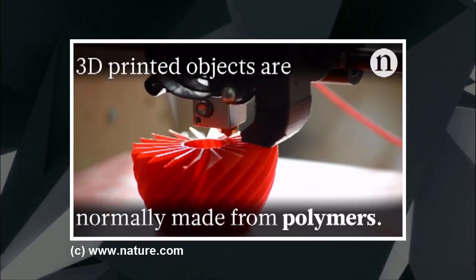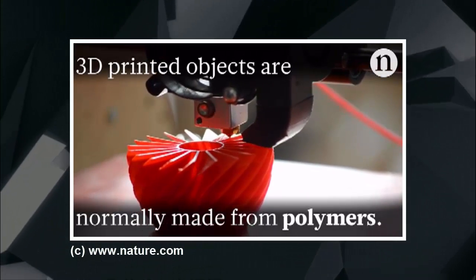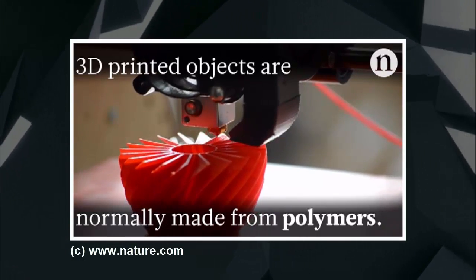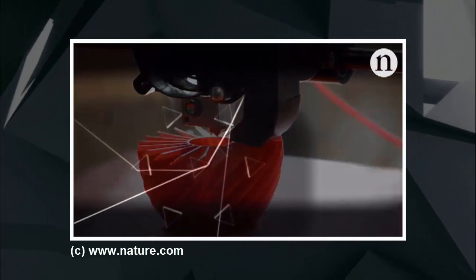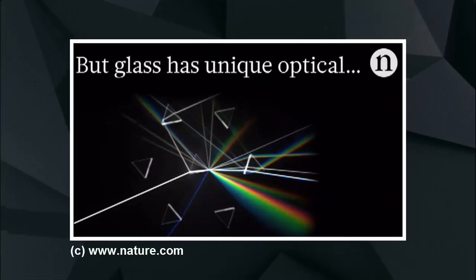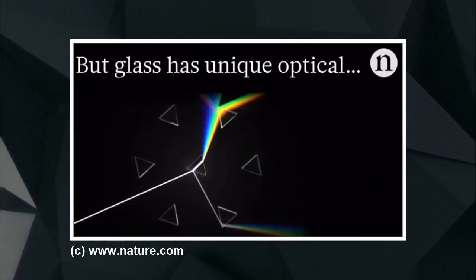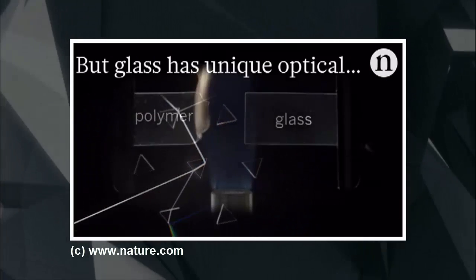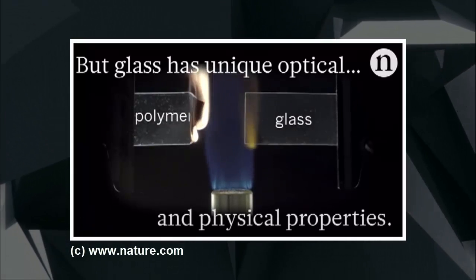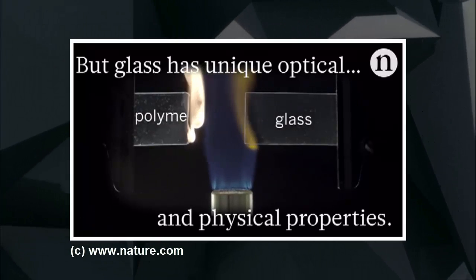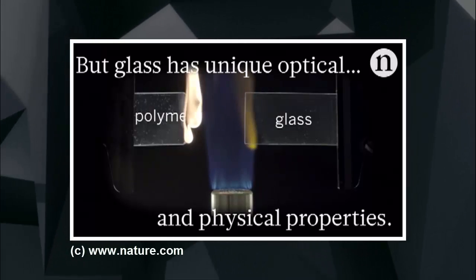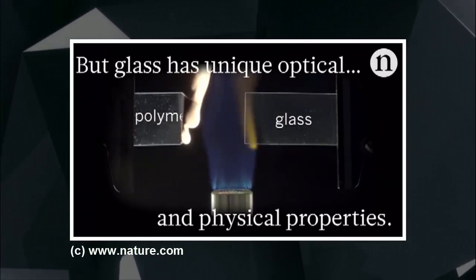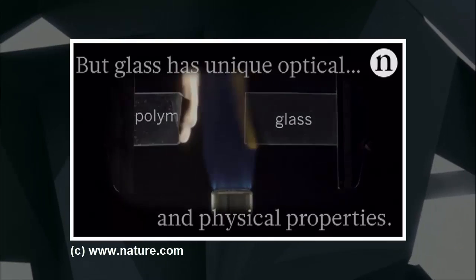This could pave the way for use of silica glass in construction. The ability to manufacture glass in detail never seen before could change the way we use one of the oldest materials known to mankind. The new technique was devised by Bastian Rapp and colleagues from the Karlsruhe Institute of Technology in Germany.